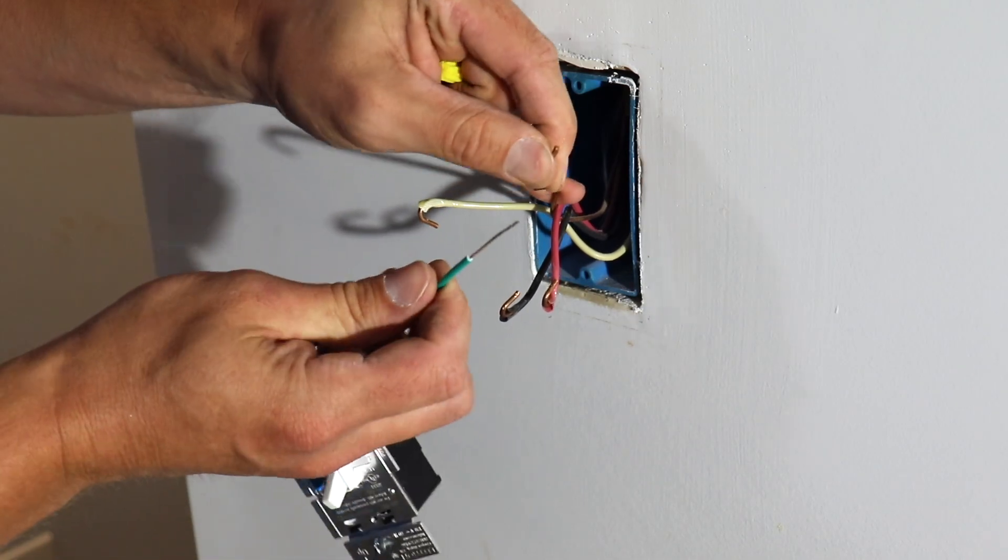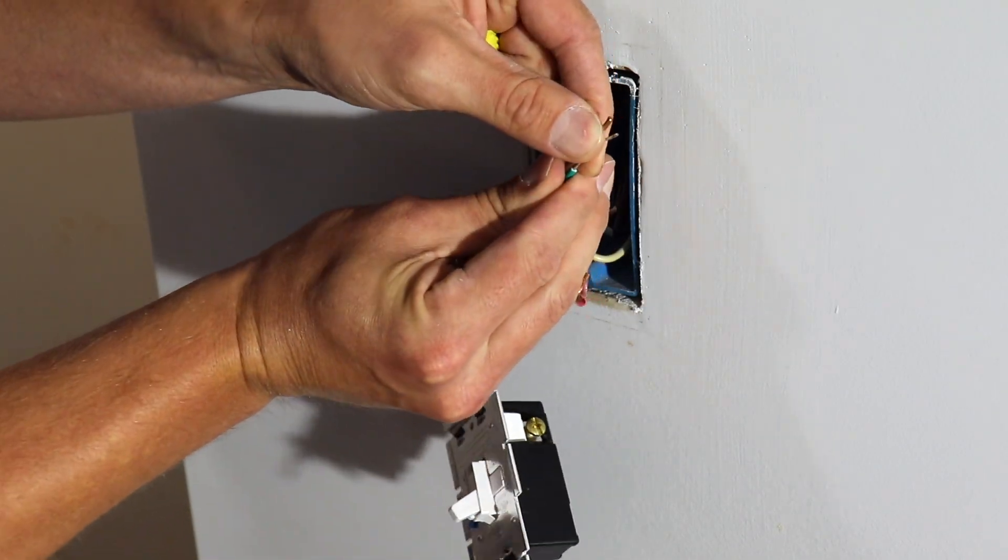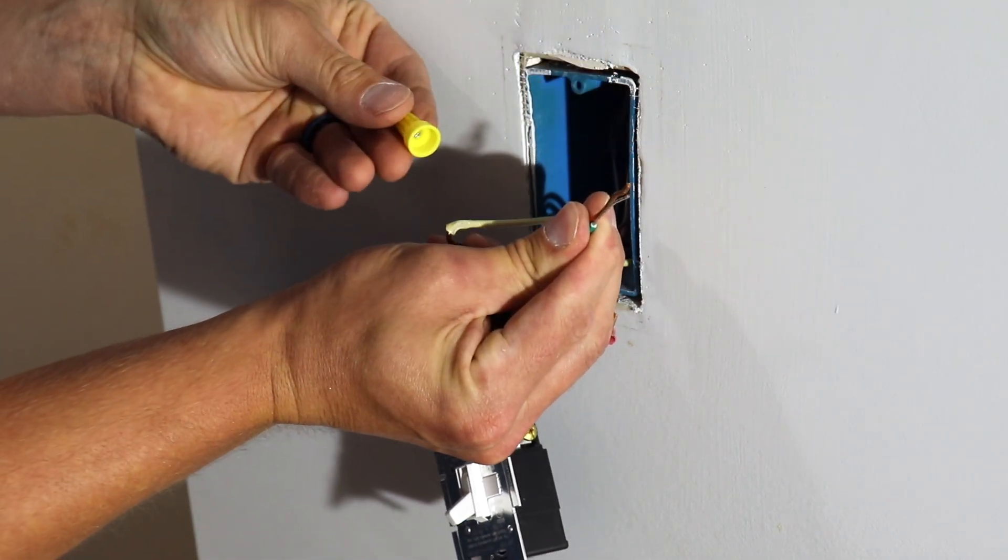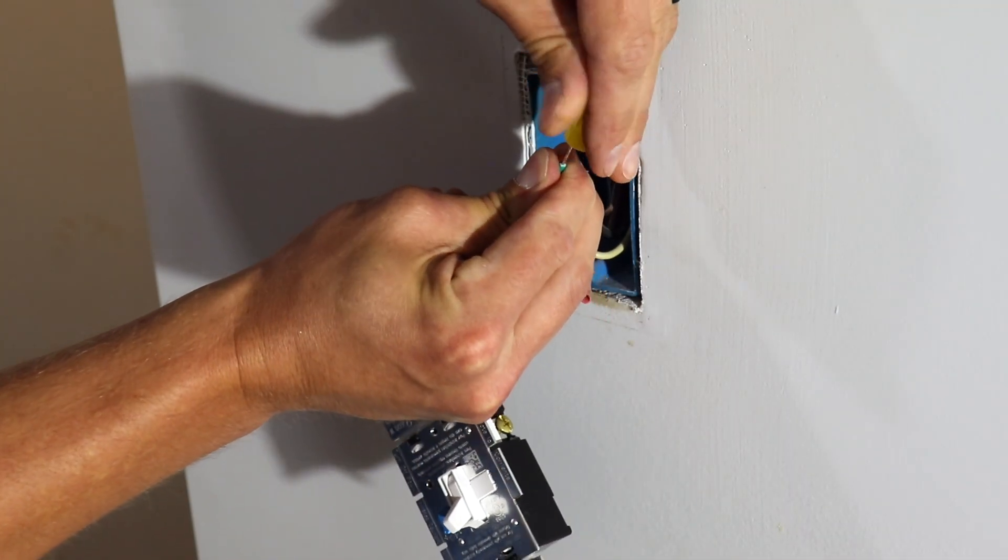So all you're going to do is place your two wires together, take your wire nut, and then wire nut it tight together.